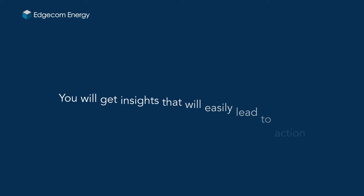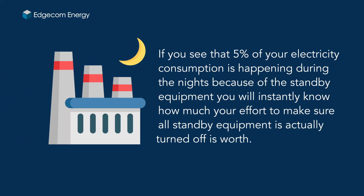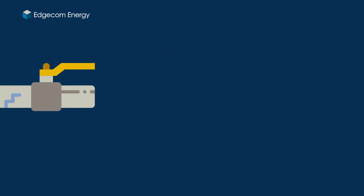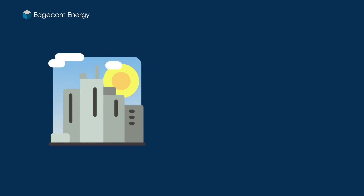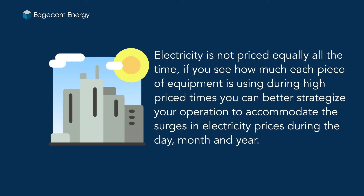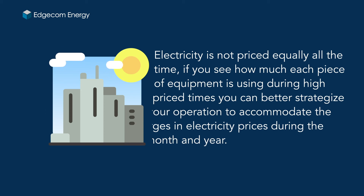Let's see three real-life examples. First, if you see that 5% of your electricity consumption is happening during the night because of standby equipment, you will instantly know how much your effort to make sure all standby equipment is actually turned off is worth. Second, if you see that during nighttime you are consuming a weird amount of water, you'll know that there is probably a leak. Third, electricity is not priced equally all the time — if you see how much each piece of equipment is using during high-priced times, you can better strategize your operation to accommodate the surges in electricity prices during the day, month, and year.